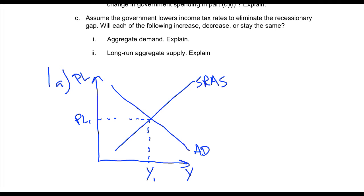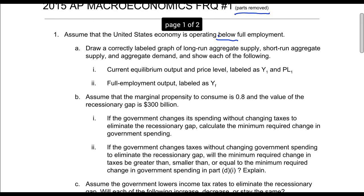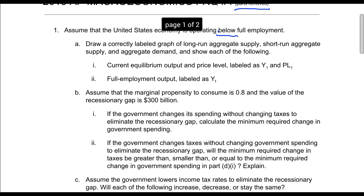That's at price level 1, and I'm supposed to label this as Y1. Because we're operating at below full employment, I want this equilibrium point to be at less than the full employment and less than the long-run aggregate supply. So I'm going to draw my long-run aggregate supply to the right of my equilibrium, which shows that I'm in a little bit of a recession, that I've got a recessionary gap. And then it also said to label this as Yf for full employment, because if I was at full employment, I would be producing at the long-run aggregate supply curve.